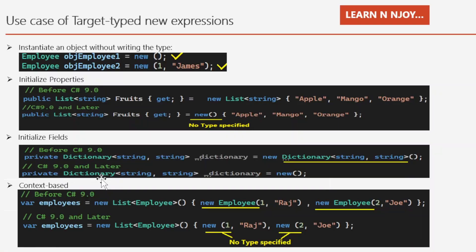Now let's discuss use cases of target-type new expressions — where we can use them in C# 9.0 and later versions. The first use case is instantiating an object without writing the type. When creating an object for a class we can use this feature when the type is known. For example: Imply objImply1 = new(); and Imply objImply2 = new(1, "James"); — we haven't written the Imply keyword on the right-hand side.